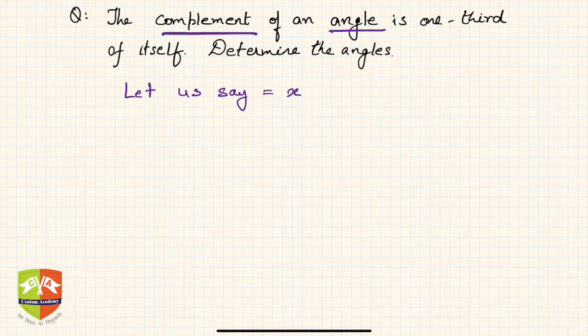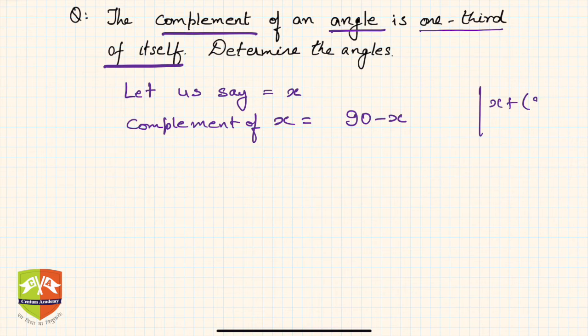Now again, the complement of an angle is one third of itself. So complement of an angle, what is complement of x? Complement of x will be nothing but 90 minus x, because x plus 90 minus x added together gives you 90 degrees.